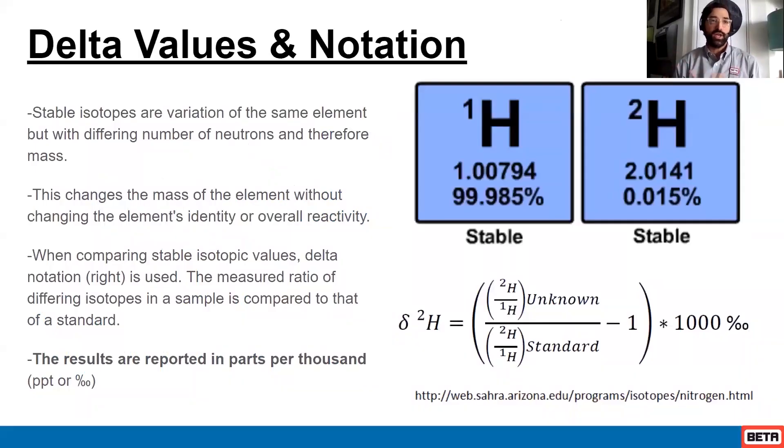When we are describing these change values, we use what's called delta notation. We're measuring the ratio of the deuteriums to the proteums, and this can be done for any element. It would be the rare over the common of an unknown, and we compare that to the same ratio for the standard.